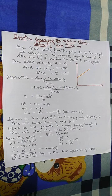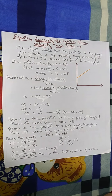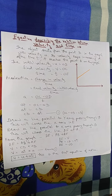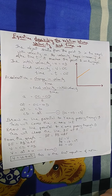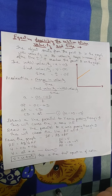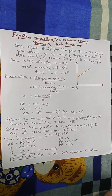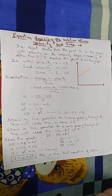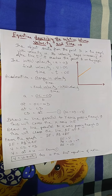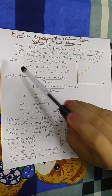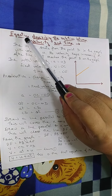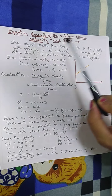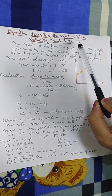Hello dear friends, now we have to see the equations of motion. Newton has made three sets of equations of motion called kinematic equations. Let us start with the first equation, which describes the relationship between velocity and time.